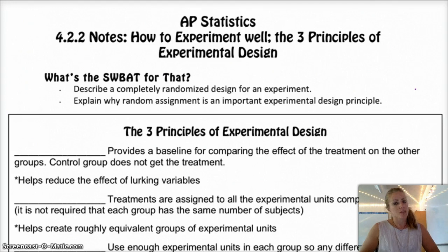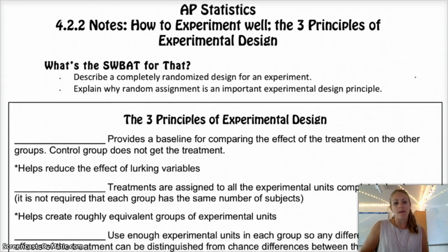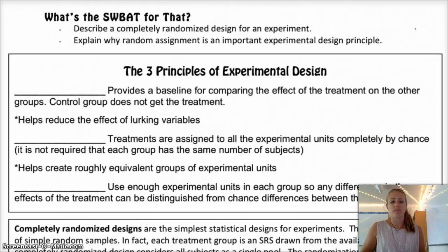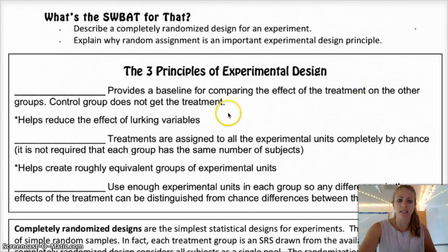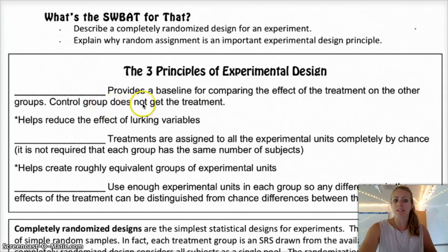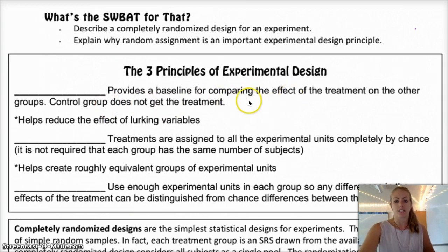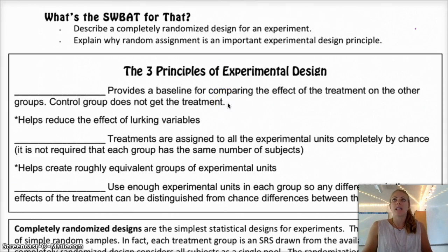The first principle of experimental design is control. Control provides a baseline for comparing the effect of the treatment to the other groups. The control group does not get the treatment, or maybe they get a placebo, like a sugar pill. The idea with control is you need to have something to compare the results to.